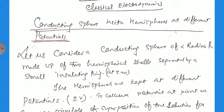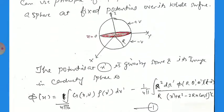What is the problem? Let us consider a conducting sphere of radius R made up of two hemispheres separated by a small insulating ring, situated at the origin. The hemispheres are kept at different potentials, plus V and minus V.